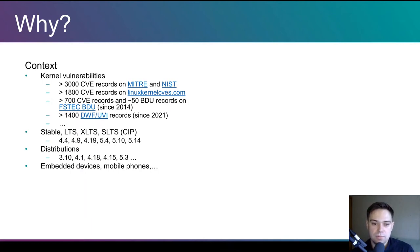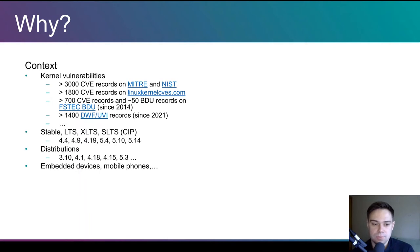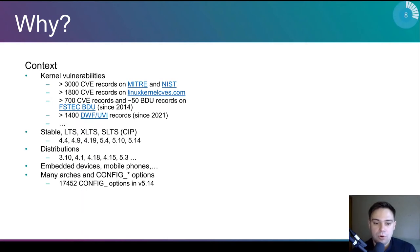Sometimes when you do your own backporting, you take features from mainline — for example, to speed things up — or you backport entire drivers. In that case, the information that a specific vulnerability existed in mainline from version A to version B gives you very little information. Moreover, the kernel is a highly configurable project, and some configurations are vulnerable while others aren't because a driver is simply not enabled.